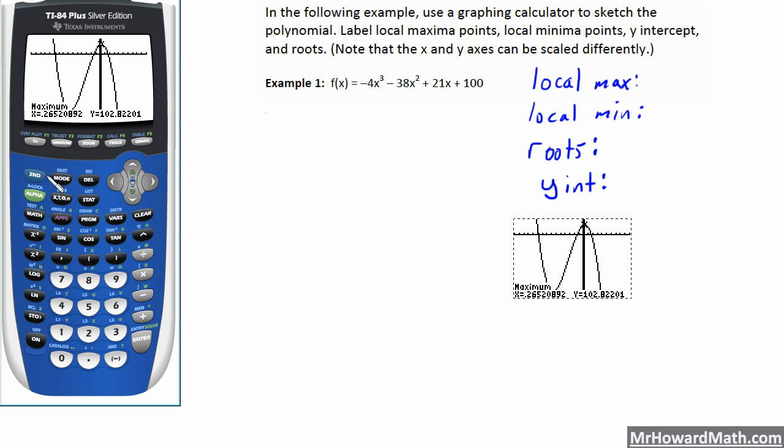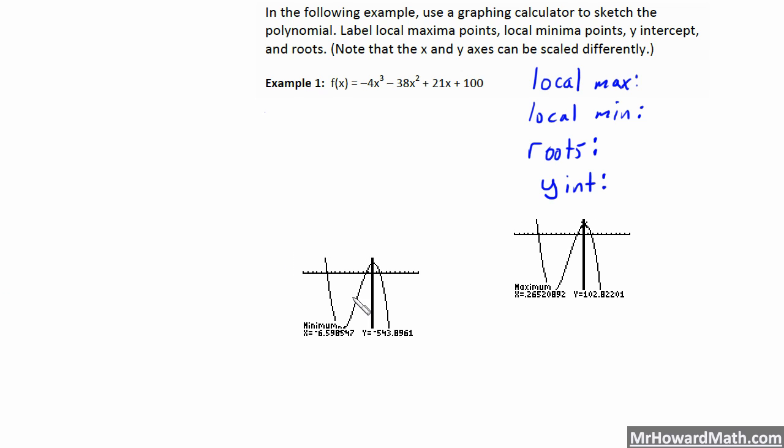Let's find the local minimum next. So second trace minimum, option 3. For left bound, I'll just put in negative 10. I know that's left of it. That'll work. And I know about negative 2 is certainly to the right of that local minimum value. So that will work. Guess, just hit enter. And the calculator found it for us. So let's bring that over. Okay. So there's our minimum value.